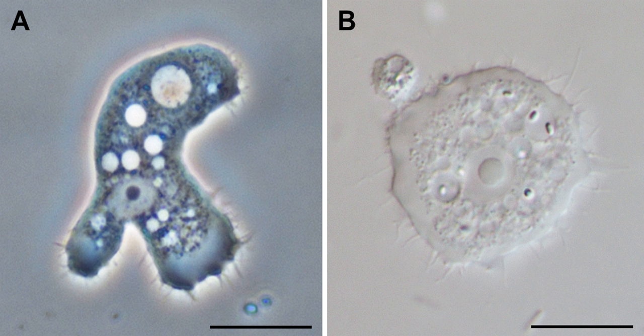Discosian amoebae lack hard shells, but some, like Cochleopodium and Coronevella, secrete intricate organic scales which may cover the upper, dorsal surface of the cell. No species have flagella or flagellated stages of life.